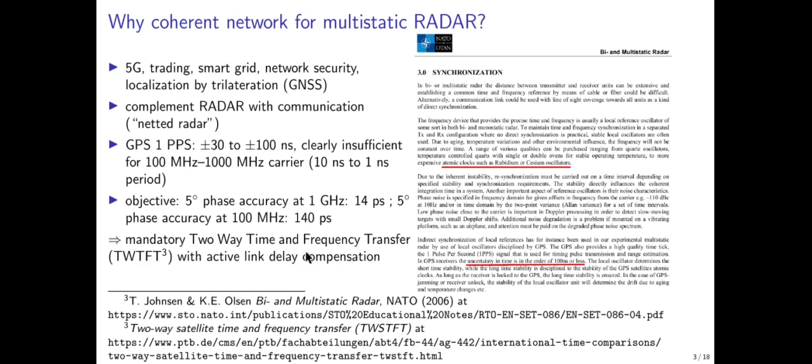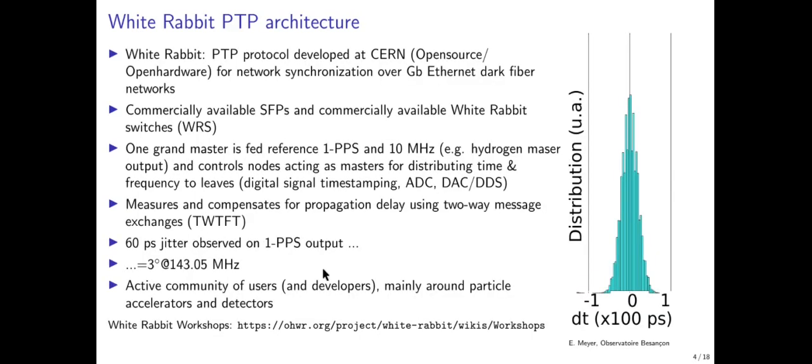We need two-way time and frequency transfer compensation on active links, where the two-way time transfer is measured and compensated at each end, assuming the link is symmetric and that back-and-forth time delay is equal. This must be a constant feedback loop since path delays change with temperature and stress in fibers or cables. This is what is implemented in the White Rabbit PTP architecture developed by CERN.